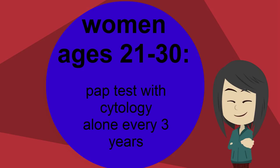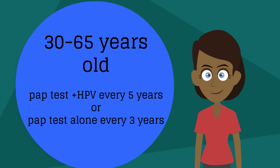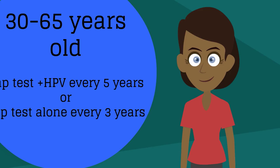Our next patient is a 50-year-old G1P1 coming in for an annual examination, who reports having had normal pap tests her whole life. Women between the ages of 30 and 65 should have a pap test with HPV co-testing every five years, or a pap test with cytology alone every three years. Remember that even though the pap test is no longer an annual examination, it is still important to regularly perform a bimanual examination and visual examination of the external genitalia.